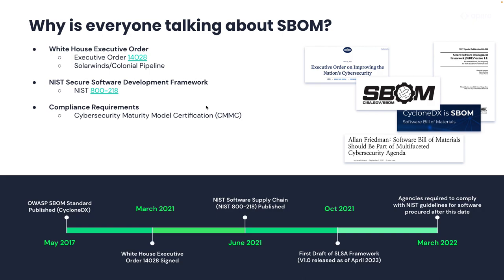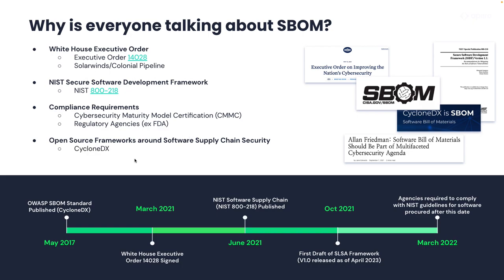We're starting to see substantially more compliance requirements requiring a software bill of materials in order to be compliant. You can see things like the CMMC, as well as regulatory agencies like the FDA, Medicare, and Medicaid, enforcing this — saying you cannot purchase software or be certified without some level of attestation from your application with a software bill of materials. Additionally, we're seeing more open source frameworks come about around software supply chain security, primarily things like CycloneDX, which is constantly being iterated on. You also have organizations like Google coming out with frameworks like SALSA around the different types of controls you should have within your CI/CD pipeline and secure software development lifecycle.